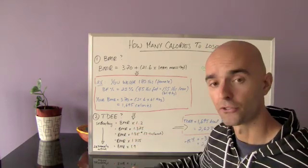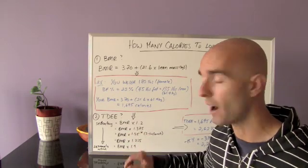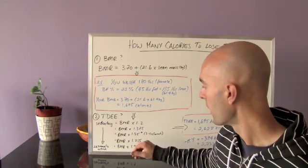Alright? So the first activity multiplier is 1.2. Then it's 1.375. The middle one we're going to work with is 1.55. 1.725 is the fourth one. And then 1.9 is the fifth.